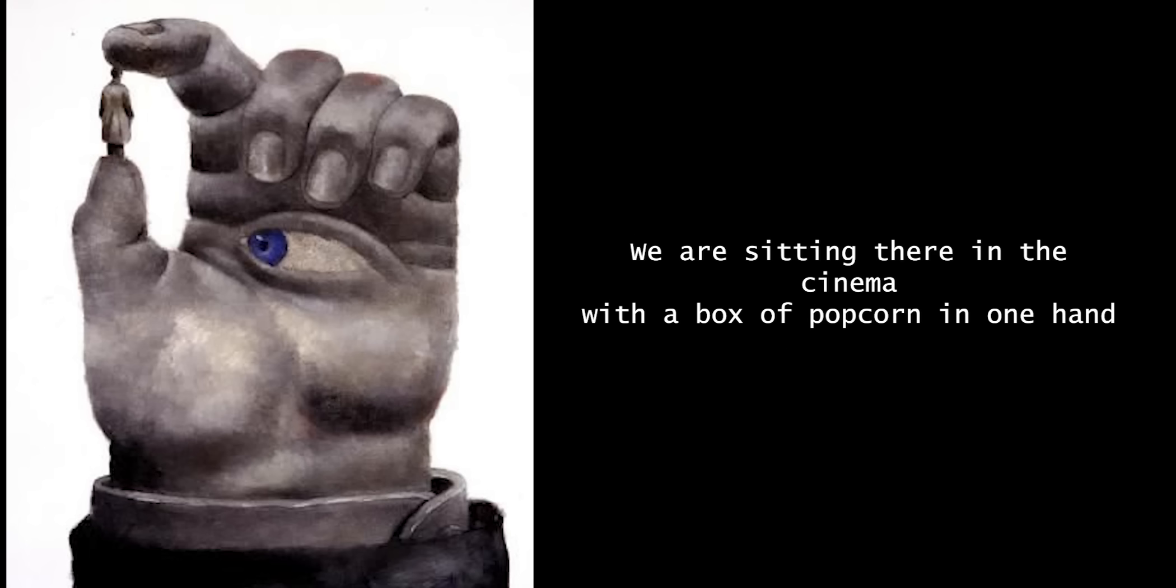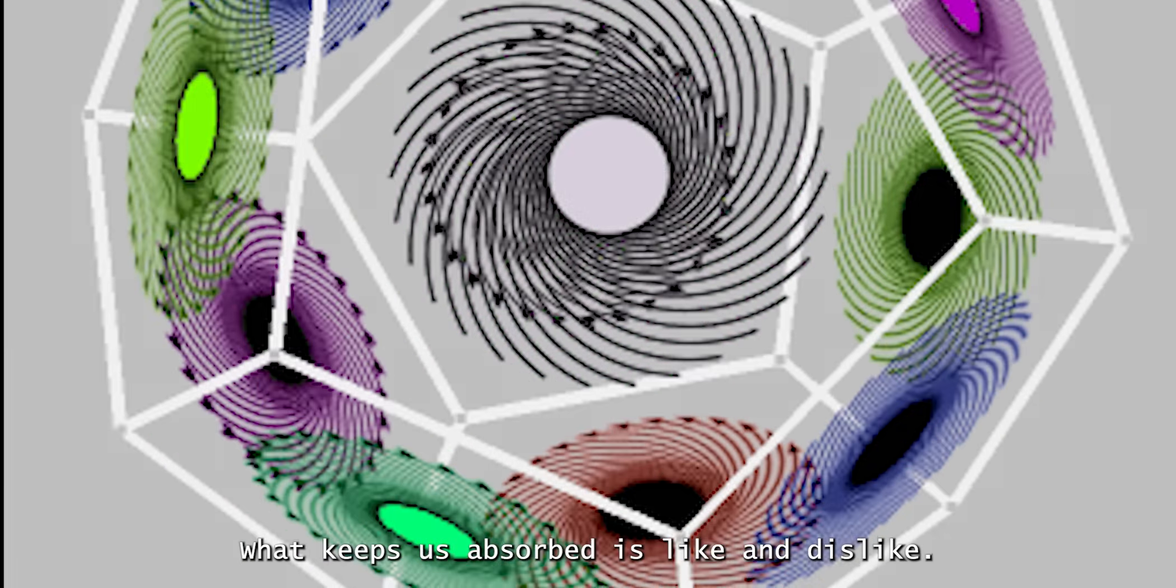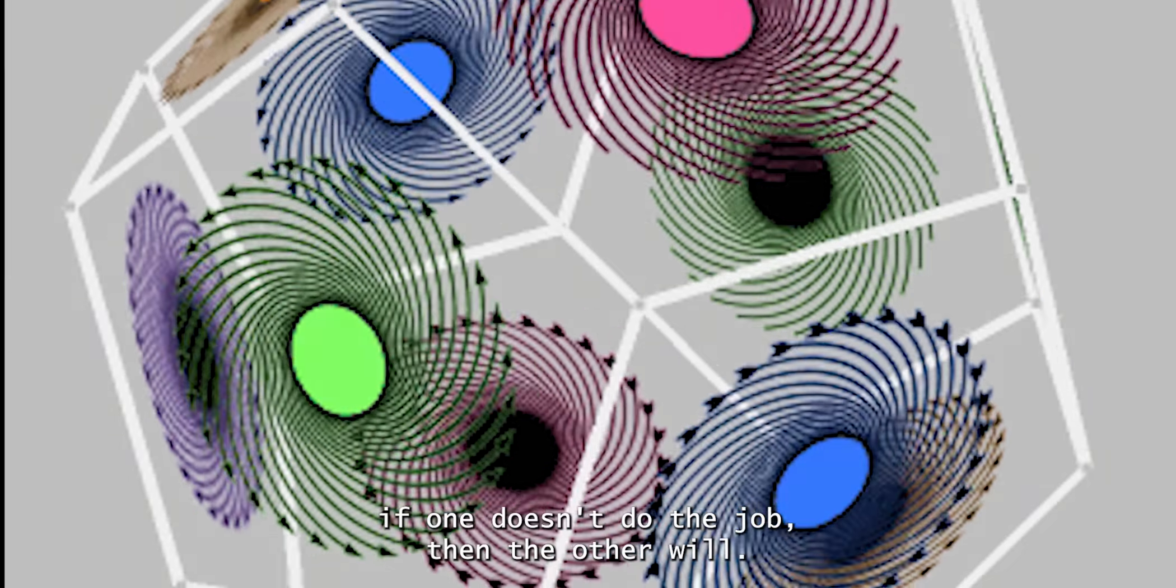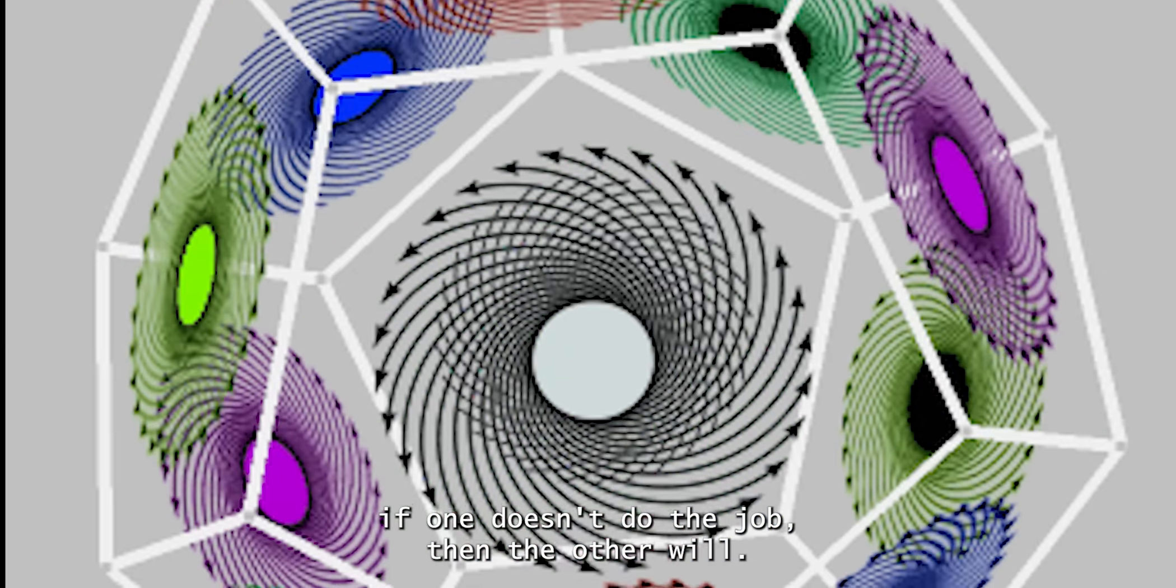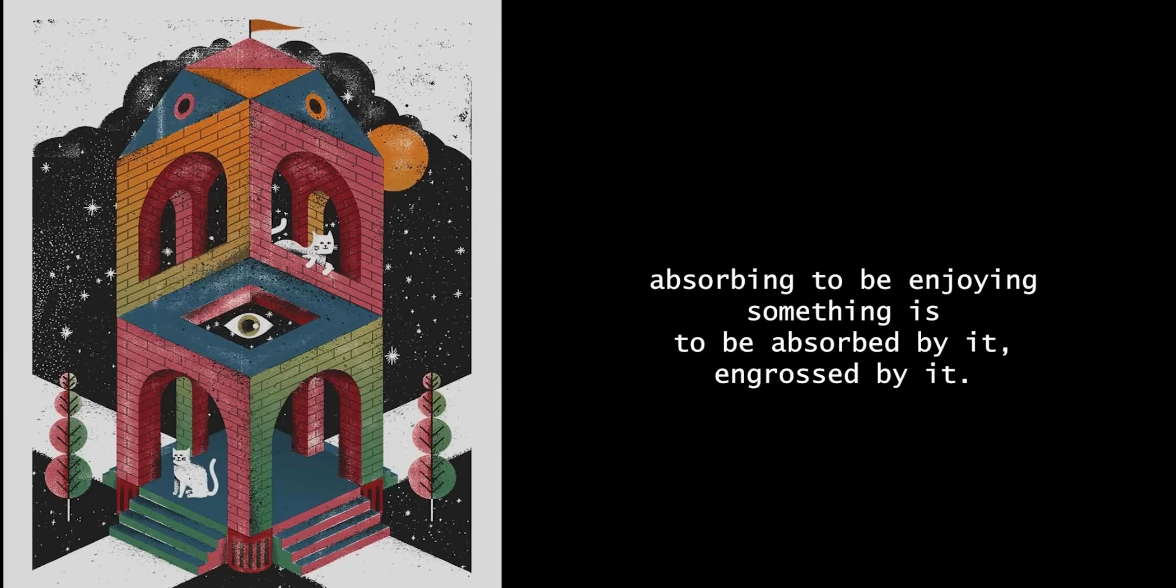We're sitting there in the cinema with a box of popcorn in one hand and a liter and a half of coke in the other. What keeps us absorbed is like and dislike. If one doesn't do the job, then the other will. When the movie or show is interesting in an enjoyable way, then of course it's absorbing. To be enjoying something is to be absorbed by it, engrossed by it. All of our attention is taken up by it, as if by a powerful magnet.